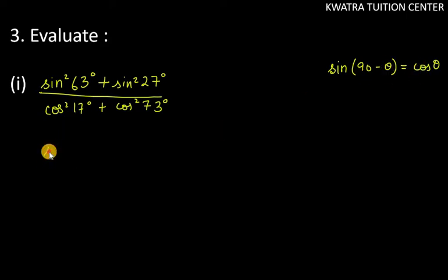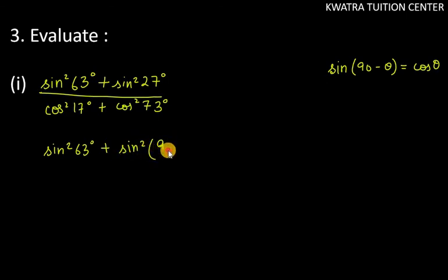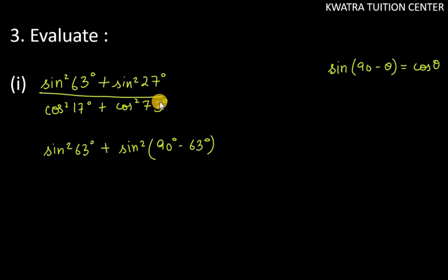So sin square 63 degree, we will change as it is. Sin square 27 degree, we will change. It will be sin square(90 minus 63 degree). Now 90 minus 63 degree — why don't you write 90 minus 27? Because what you want to form is 27 degree with the help of 63. Because 90 minus 63 is 27.